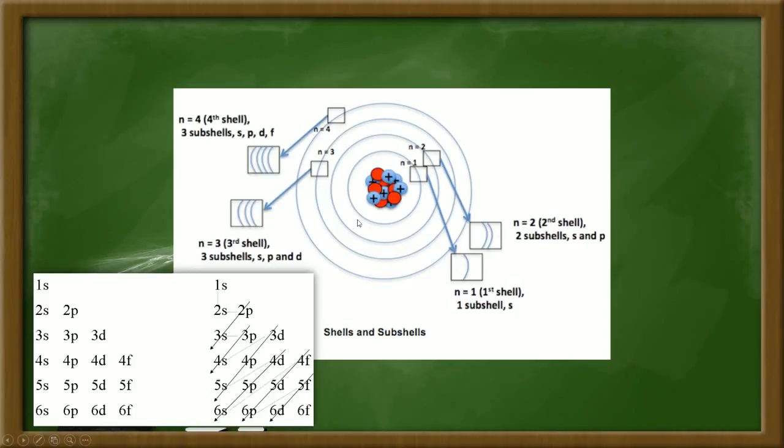We learnt that the first shell contains an S orbital, and an S orbital can hold up to two electrons, as we saw before. Therefore, the first shell can only hold up to two electrons. The second shell has an S and a P orbital, and it all makes sense now, because an S orbital can hold up to two electrons, and a P orbital can hold up to six, so two plus six is eight. The maximum capacity of electrons of the second shell is eight electrons.